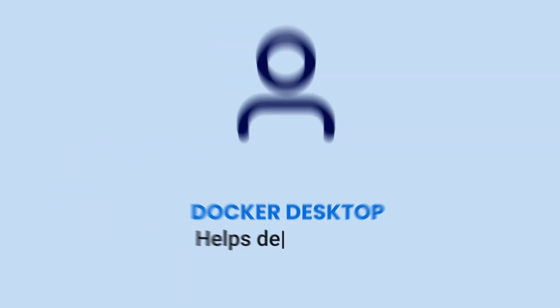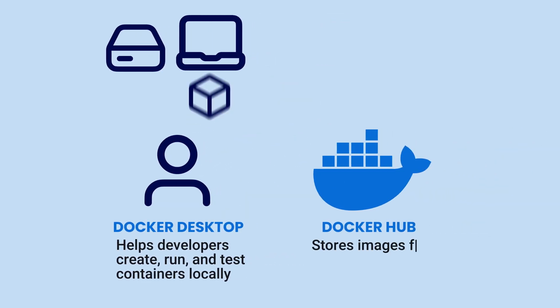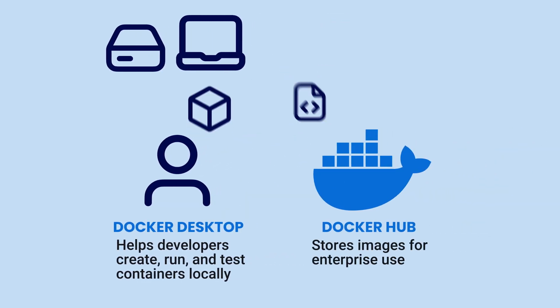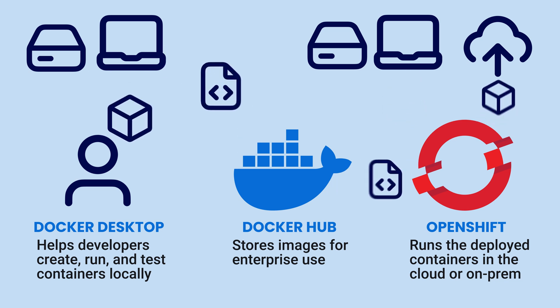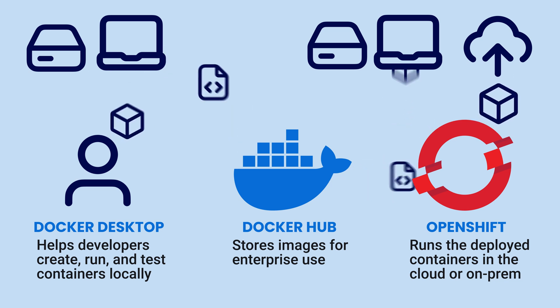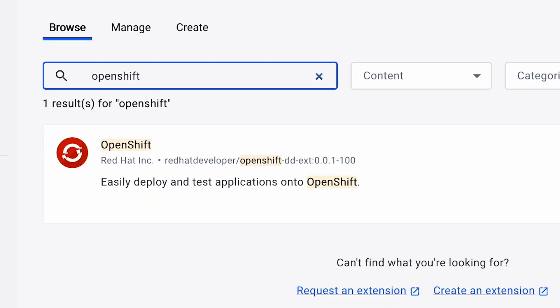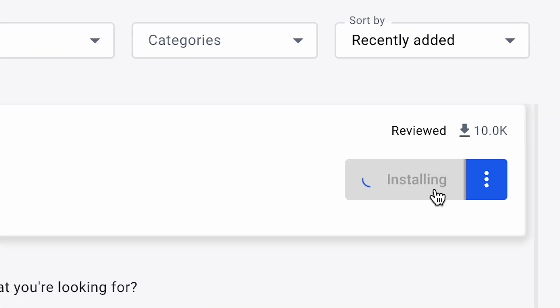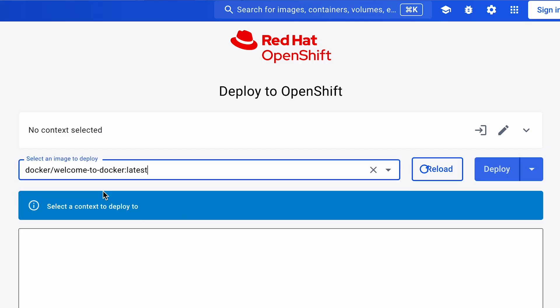Docker Desktop can help developers create, run, and test containers locally. Docker Hub can store those images for enterprise use, and OpenShift runs those deployed containers in the cloud or on-prem. As you can see, we really are better together, which is why Docker and Red Hat have a healthy partnership. Red Hat publishes public images on Docker Hub and has created an OpenShift-specific extension for Docker Desktop. This extension makes it easy for developers to deploy images built with Docker Desktop directly to OpenShift.